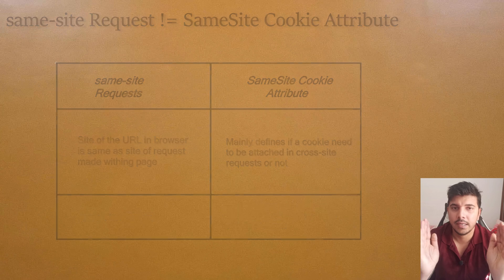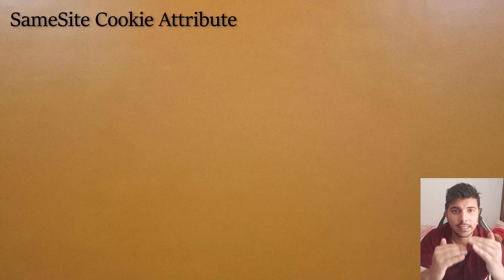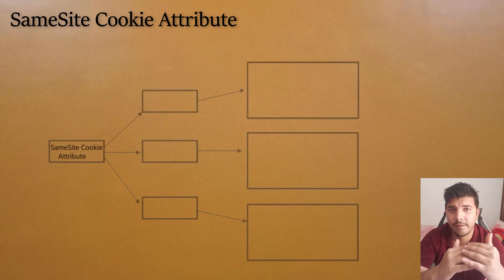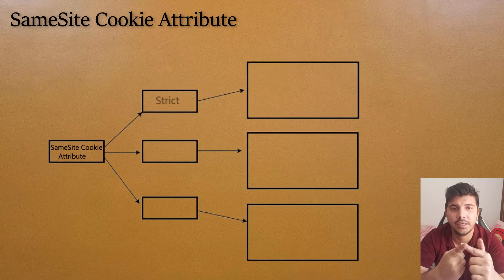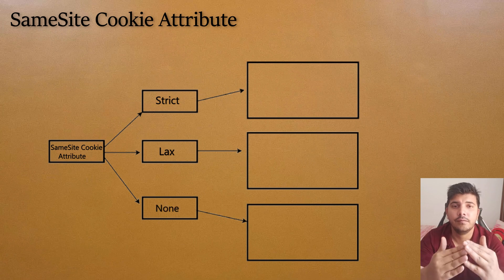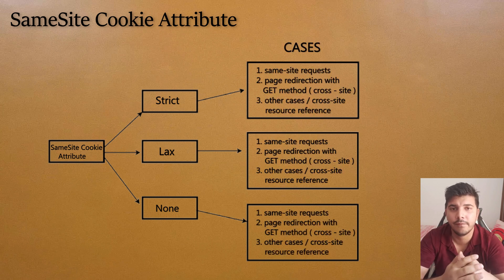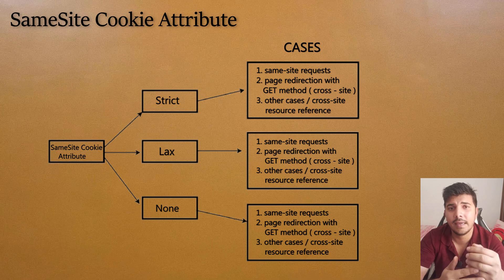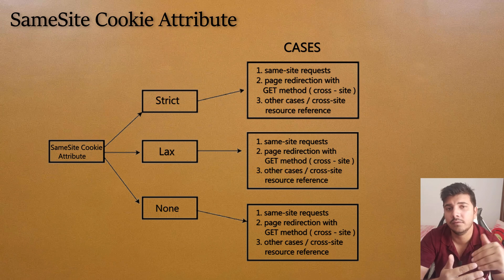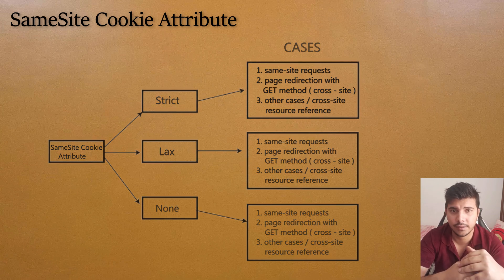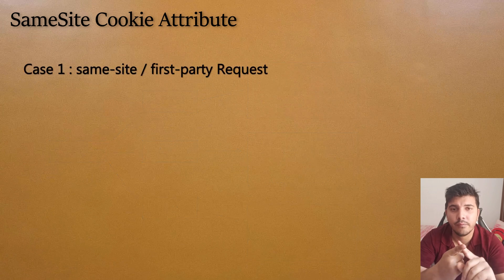Now let's start discussing the SameSite cookie attribute, which can have three values: Strict, Lax, and None. To understand it better, we should consider three case scenarios for all of these values. Let's first understand the cases, and then apply all three cases to each value. Case number one is when the request is same-site.